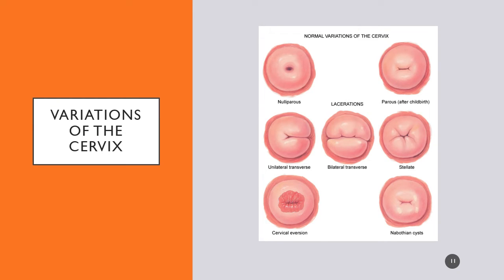To summarize normal cervical appearances: a nullip (upper left) will have a small, tight, round os. After childbirth (upper right), there is a more lateral opening and possible evidence of healed lacerations. Cervical eversion is shown bottom left, and Nabothian cysts bottom right. These are all normal findings and normal variations depending on the patient's baseline.